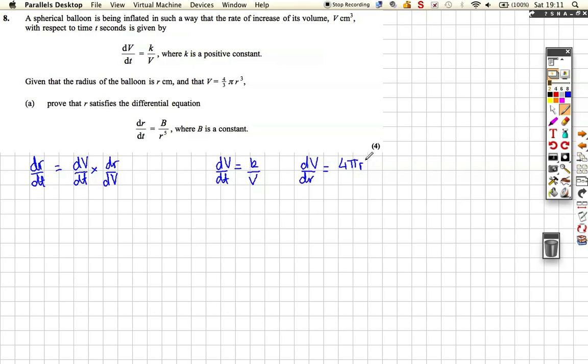Which actually you should recognize anyway - this is actually an expression for the surface area of a sphere. But multiply by the power, 3s cancel, reduce the power, pi r squared. So that means that we can flip this one upside down. So to find dr/dt, what we're going to have is k over v multiplied by 1 over our expression for dv/dr, which is 4 pi r squared.